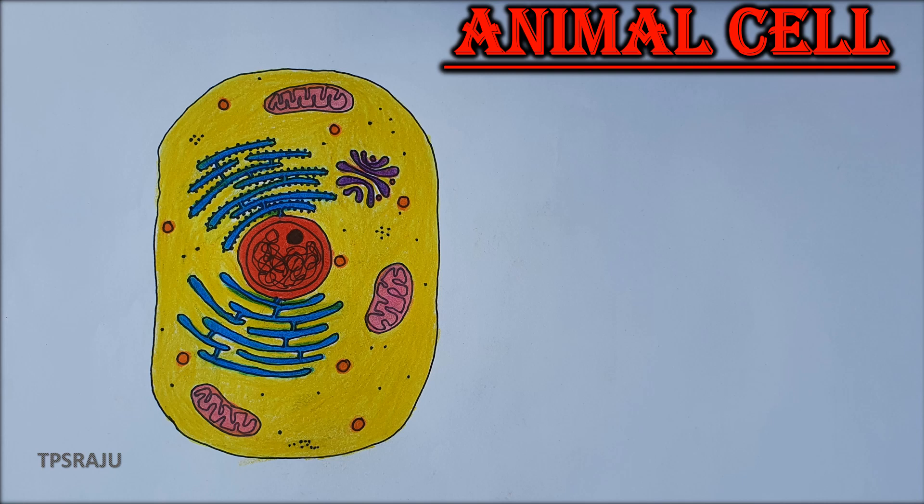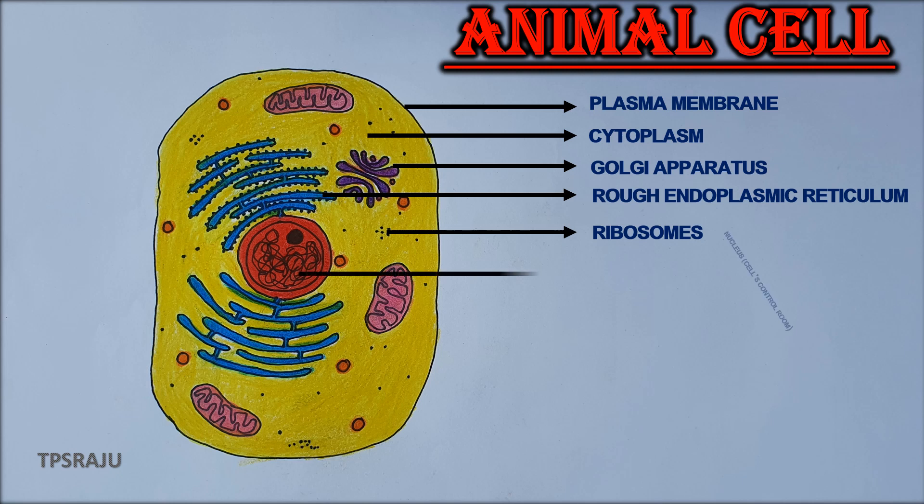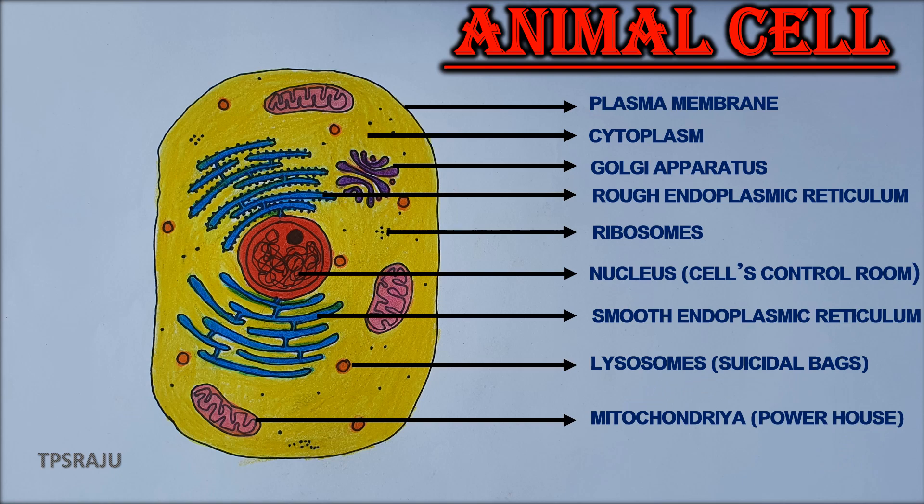Finally, shall we label the parts. Plasma membrane. Cytoplasm. Golgi apparatus. Rough endoplasmic reticulum. Ribosomes. Nucleus. Smooth endoplasmic reticulum. Lysosomes. Mitochondria.